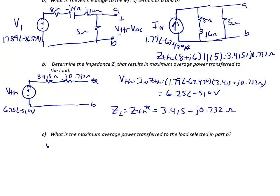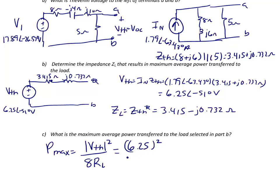The maximum average power transfer is P_max equals the magnitude of V_Thevenin squared over 8R_L — that's our peak formula. The magnitude of V_Thevenin is 6.25, so 6.25 squared over 8 times R_L. When you have an impedance, the real part is R_L and the imaginary part is jX_L. For this example, R_L is 3.415 ohms and X_L is −0.732 ohms. So P_max equals 6.25² divided by (8 × 3.415), which is 1.43 watts.